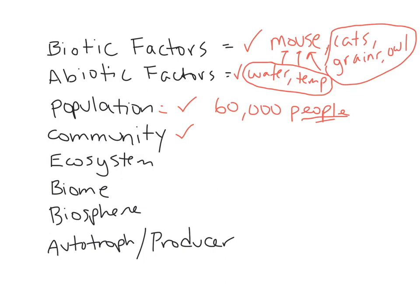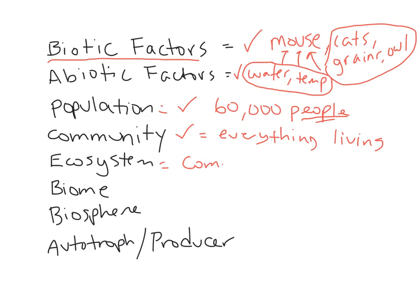Remember, a community is much larger because now it's not just one species — it's everything living in an area that makes up a community. You can say it's all the biotic factors in an area. Now an ecosystem is the community, but it also includes the non-living environment. So it's all the community and the non-living environment — the abiotic factors — things like the soil, the water, sunlight, etc.